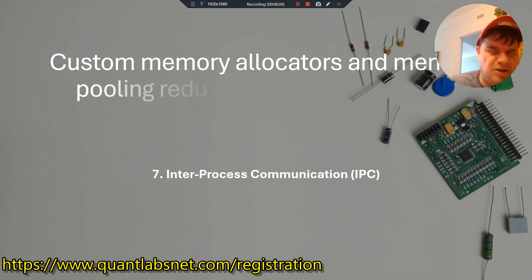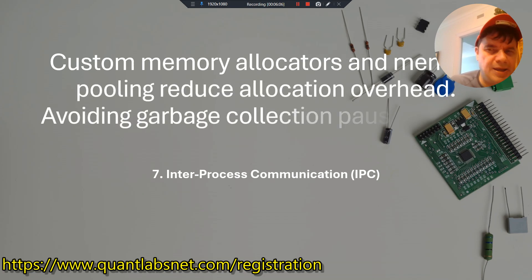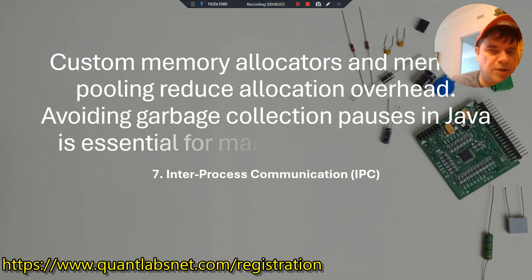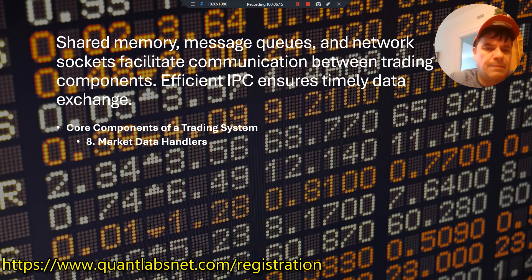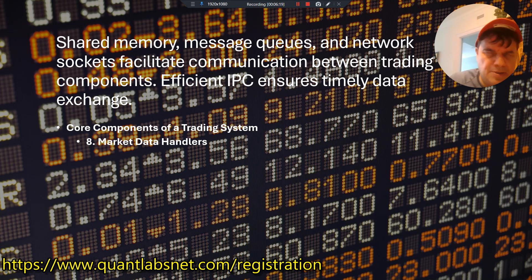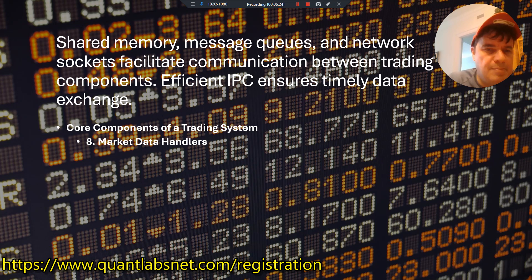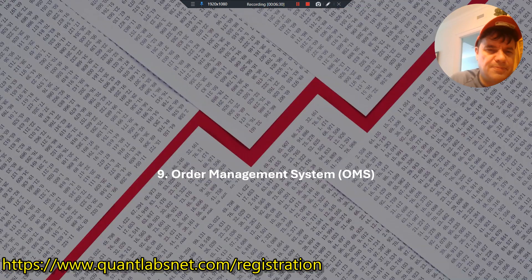Inter-process communication: custom memory allocators and memory pooling reduce allocation overhead. Avoiding garbage collection pauses in Java is essential for maintaining low latency. Shared memory, message queues, and networking sockets facilitate communications between trading components. Efficient IPC ensures timely data exchange.